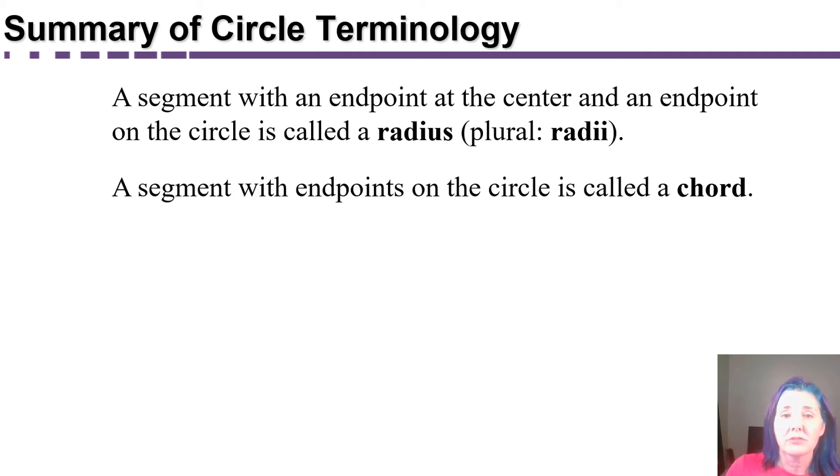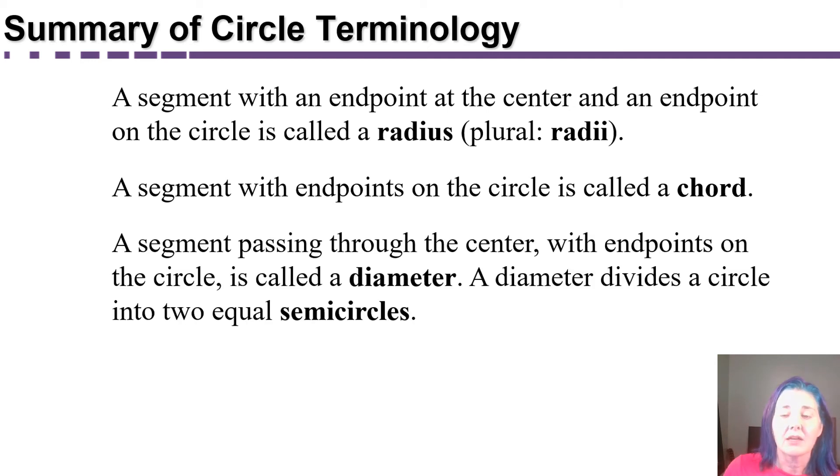A segment with endpoints on the circle is called a chord. A segment passing through the center with endpoints on the circle is called a diameter. A diameter divides a circle into two equal parts called semicircles.